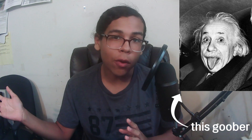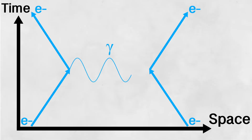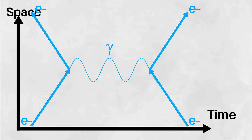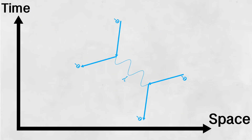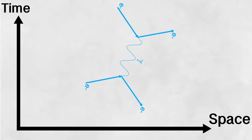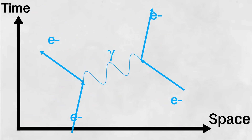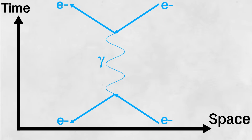According to Einstein, space and time are interchangeable at near light speeds — hence spacetime. So really, we can not only swap these axes, but we can also rotate the diagram as much as we want. If we rotate it 90 degrees, we're left with this, where these electrons are now moving backwards through time.